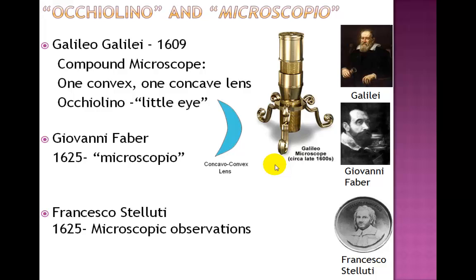He further described it as the small glass was spying things up close. However, in 1625 it was Giovanni Faber, a German doctor, who gave the instrument its current name: microscopia, or microscope. The first account of microscopic observations were actually published in the same year by an Italian named Francesco Stelluti, in which he described the anatomy of a bee.